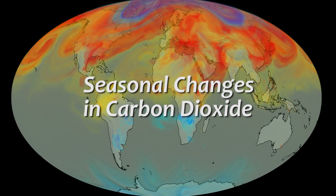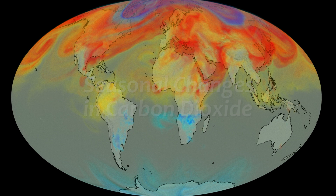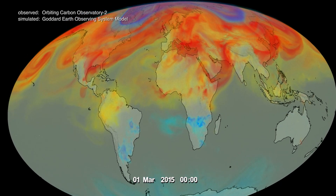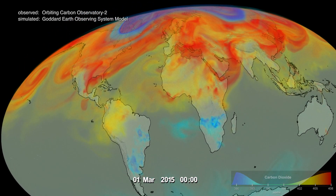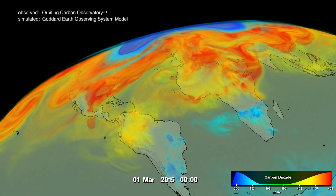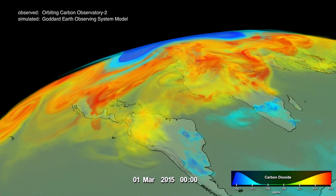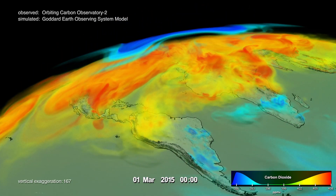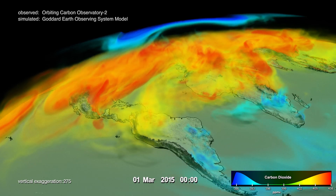This is carbon dioxide, or CO2, in the Earth's atmosphere. It is derived from a synthesis of observed and simulated data. Reds and yellows show regions of higher-than-average CO2, while blues show regions lower-than-average.